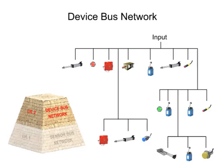The next increasingly complex level of industrial fieldbus networking is the devicebus network. The devicebus network is similar in function to the sensorbus network, but works on a larger scale, connecting many sensors and actuators together. It also connects equipment to variable speed drives and motor control centers that allow for control of individual elements in the network.